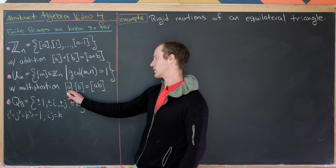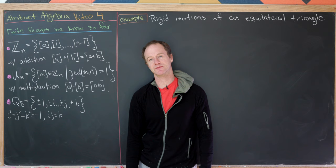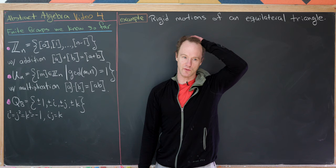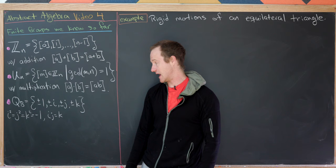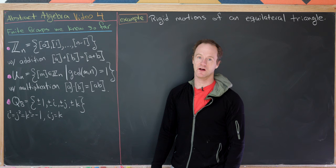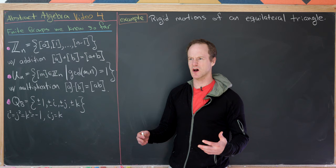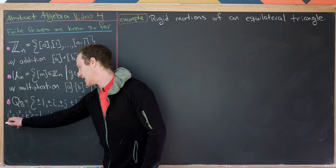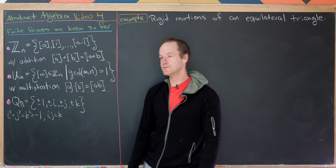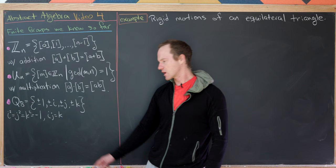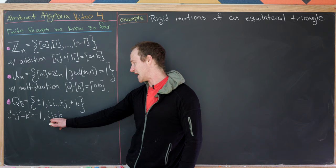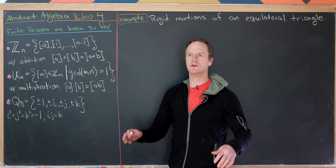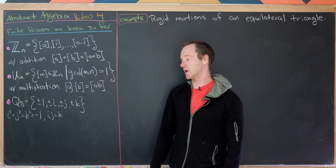Finally we had the quaternion group, an example of a non-abelian group of order 8, consisting of ±1, ±i, ±j, and ±k. This can be thought of as an extension of the complex number i. The key relations are i² = j² = k² = −1, and i times j equals k. All other relations follow from these — for instance, j times i equals negative k.